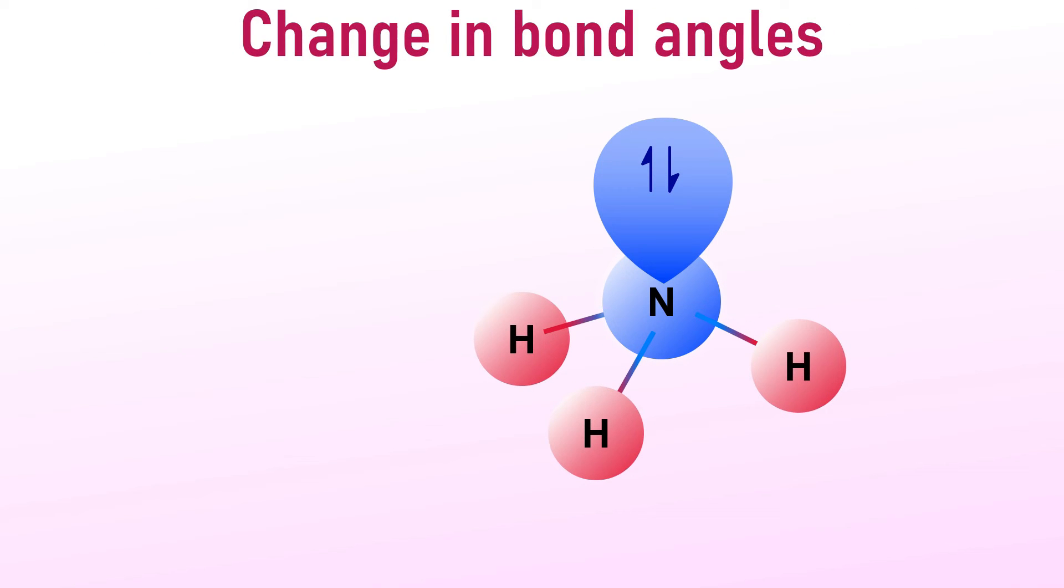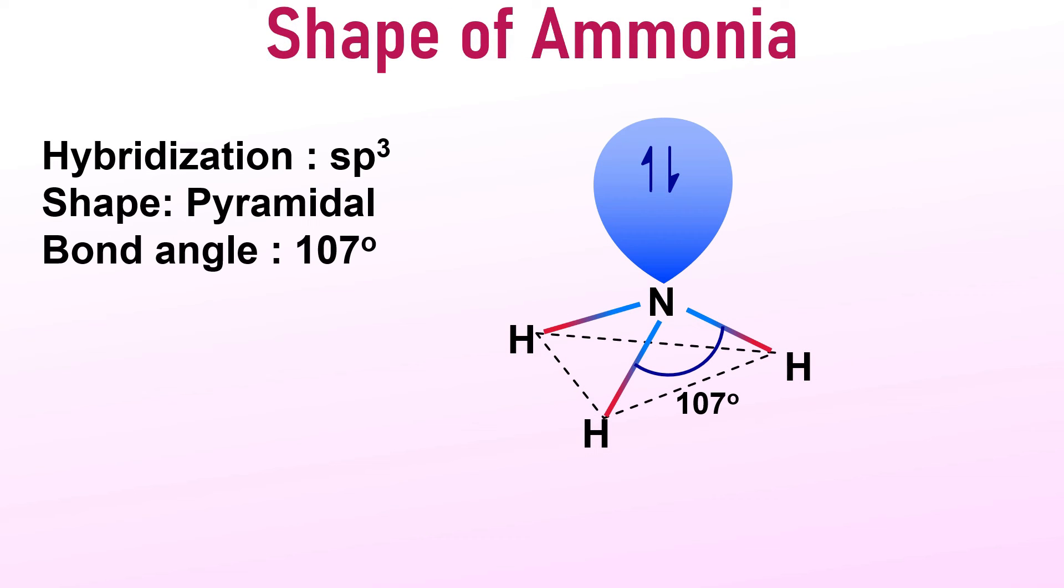And this results in a decrease in the H-N-H bond angle to 107 degrees from 109 degrees 28 minutes. This is how the ammonia molecule takes on a pyramidal shape. We can also describe its structure as tetrahedral with one lone pair on nitrogen atom.